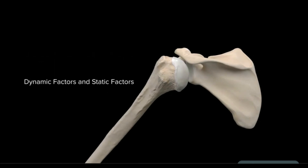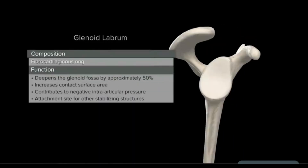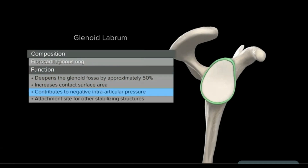This mismatch in surface area contributes not only to extreme mobility of the joint, but also increased risk of instability. The glenohumeral joint therefore gets its stability from both dynamic and static factors. The glenoid labrum is a fibrocartilaginous ring that acts as one of the static restraints by deepening the glenoid fossa, increasing contact surface area, and contributing to the negative interarticular pressure of the shoulder joint.